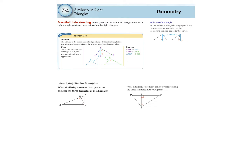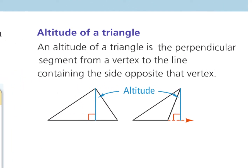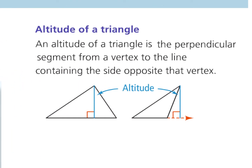The first thing we need to talk about is a vocab word called an altitude. An altitude is just another name for the height in a triangle. This segment right here would be the height if we were trying to find the area of this triangle. This one over here would be the height for this triangle. Those are the altitudes. And an altitude is always going to be from a vertex, and it's going to be perpendicular to the opposite side of that vertex.